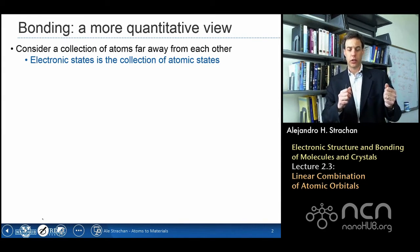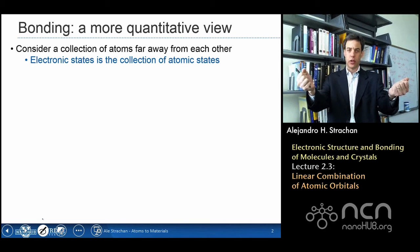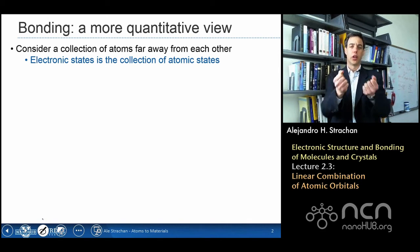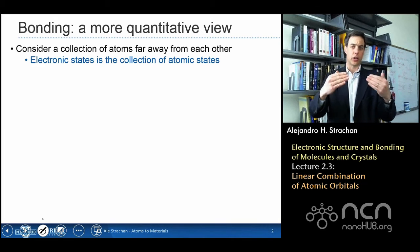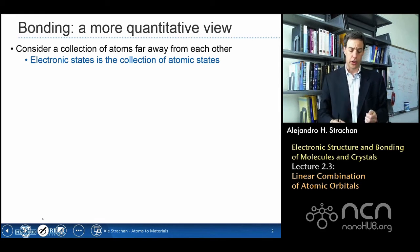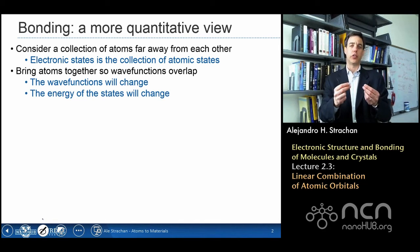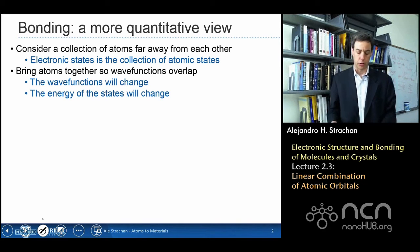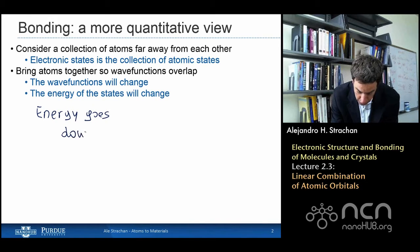What we've been discussing is that if I have a collection of atoms, I'm going to think about bonding in terms of what happens when I bring these atoms together and where the wave functions of the isolated atoms start interacting. If the energy goes down as I bring the atoms together, then I form a bond. If I don't minimize the energy by bringing the atoms together, then a bond will not be formed.